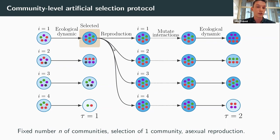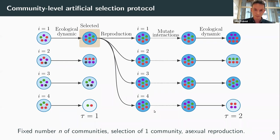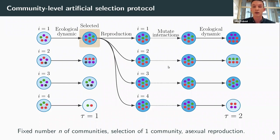We make a copy-paste of the selected community to get back the initial number of communities. But to have evolution, we need variability, so we introduce mutation of the interactions.